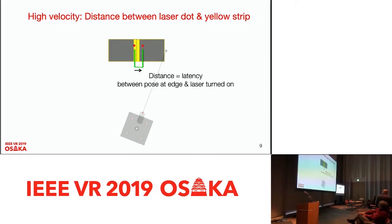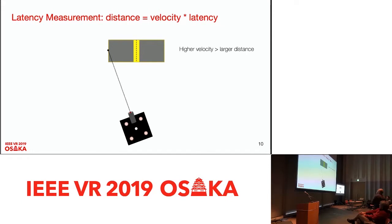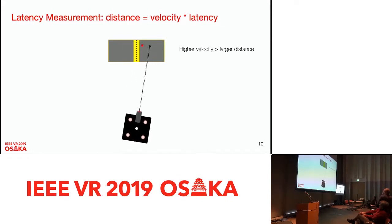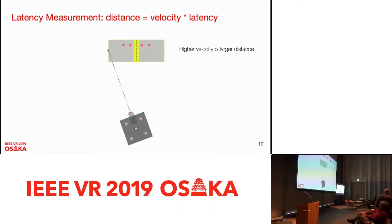So the whole idea: you move really fast back and forth, you measure the velocity, and you measure the distance. If you have the velocity and the distance, you have a measure of the latency. Here is the lab setup. Here is the track target. Alex has added two more cheap laser pointers just for measuring speed and measuring the direction of the velocity.